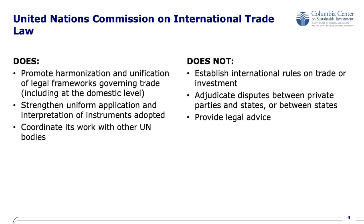What does UNCITRAL do at the commission level, and what does it not do? UNCITRAL does promote harmonisation and unification of legal frameworks governing trade and investment, including at the domestic level. It does this through model laws, legislative guides, and conventions. Model laws are used to harmonise domestic laws, while conventions are international legal instruments adopted by states to unify law at the international level. The commission also seeks to strengthen uniform application and interpretation of instruments that have been adopted, for example through the provision of technical assistance to states to implement legislative texts. The commission also coordinates its work with UN organs and entities.